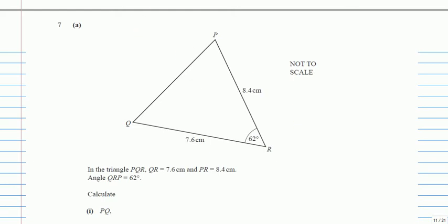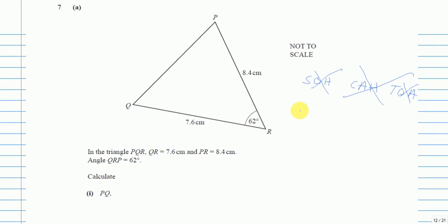We are given a triangle and it is not a right-angle triangle. Whenever we do not have a right-angle triangle, we cannot use the SOH-CAH-TOA expression — do not use this because it is only for right-angle triangles. So there are only two formulas left: if we do not have a right-angle triangle, it is either the sine rule or the cosine rule.